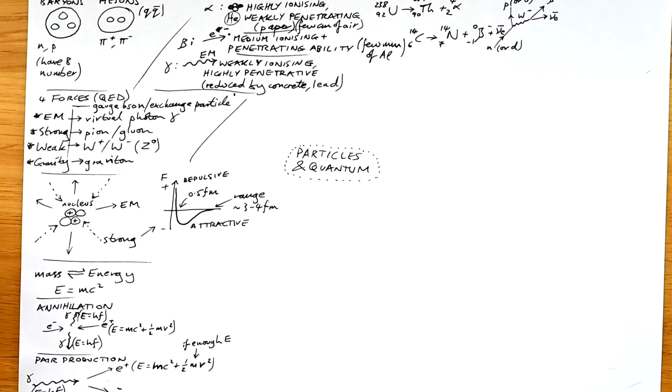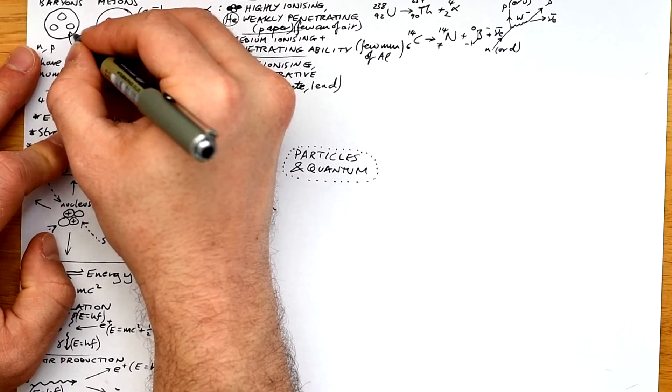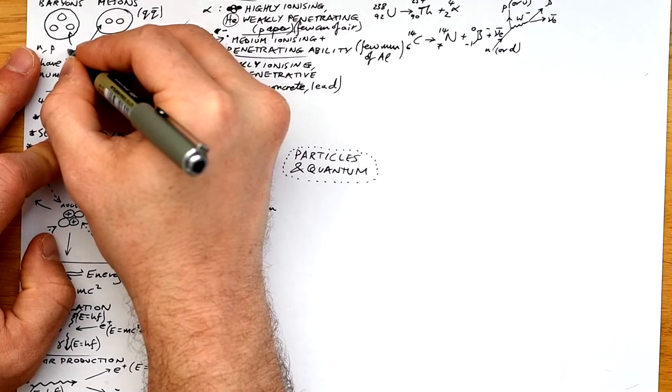A neutron is up, down, down, proton is up, up, down, so therefore we can say that actually it's a down quark turning into an up quark. You can see either one on a Feynman diagram for this.